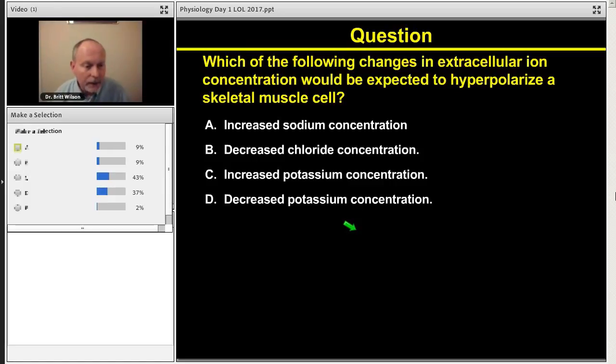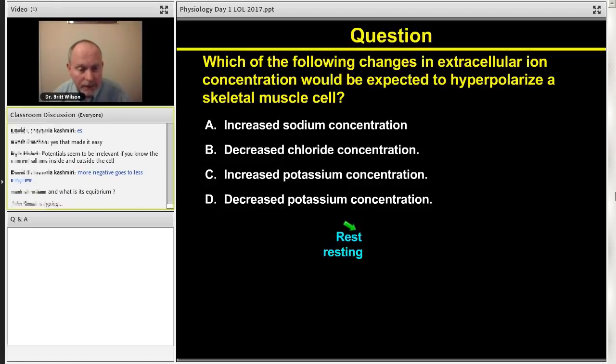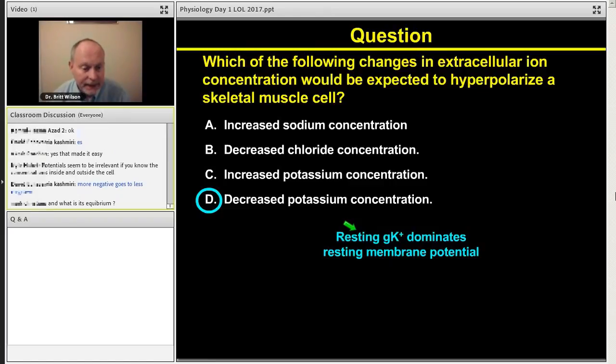All right, what do we like? We're pretty neck and neck there between C and D. The vast majority of you went with either C or D. Excellent, excellent. This question, prelude into the next topic, what I really want to drive home is resting membrane potential is dominated by potassium conductance. The G stands for conductance. The correct answer here is D. We will come back to this.